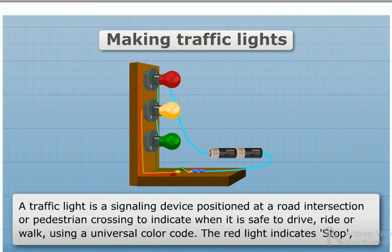Making traffic lights. A traffic light is a signaling device positioned at a road intersection or pedestrian crossing to indicate when it is safe to drive, ride, or walk. Using a universal color code, the red light indicates stop, green light indicates go, and yellow light indicates ready.